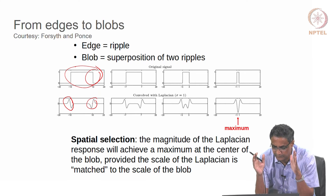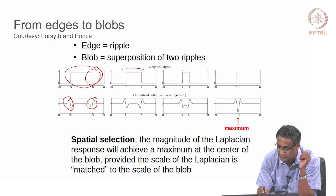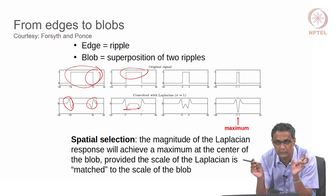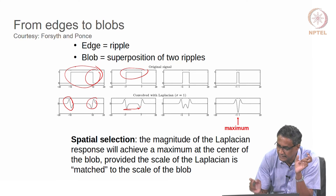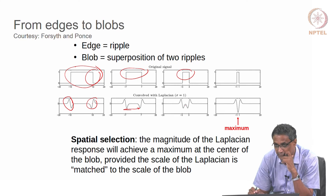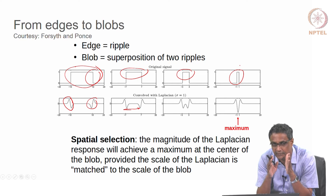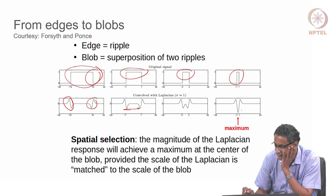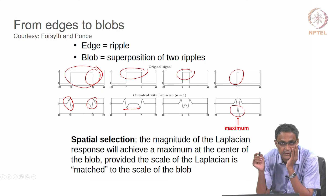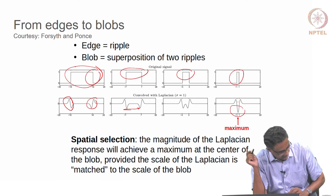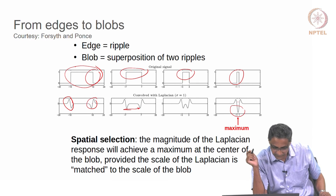Now, if this pulse — the width of this blob — shrinks, if I make it smaller, these guys will come kind of closer. Then if I reduce the width further, they come even closer, and at some point when I bring them even more close, I see something like an extremum — it could be a minimum or a maximum, but there is an extremum there.